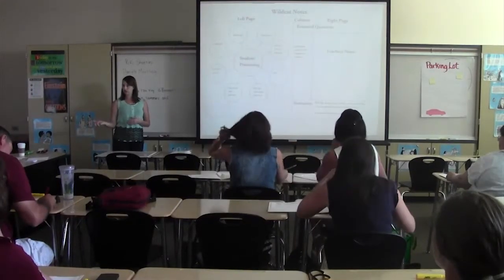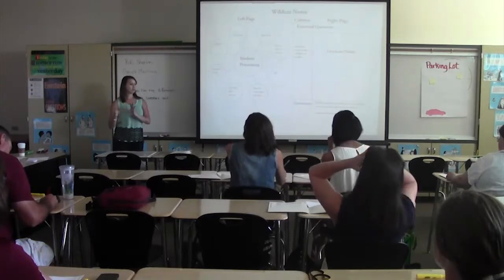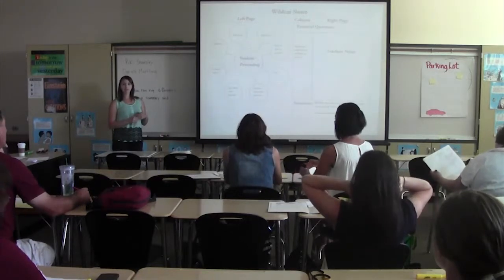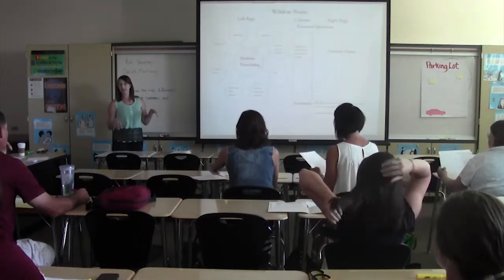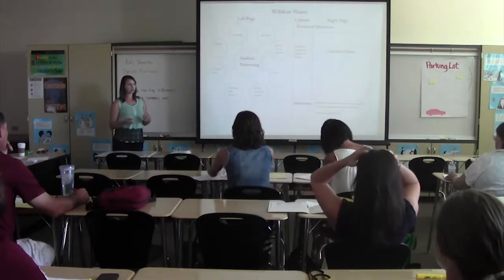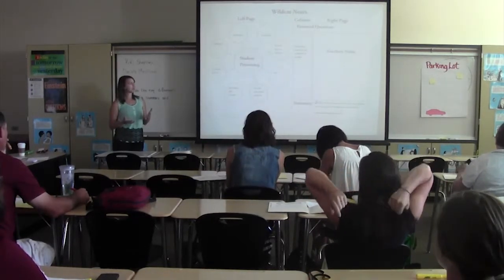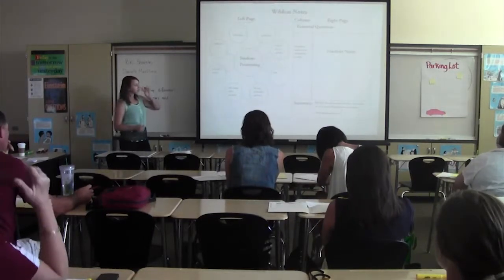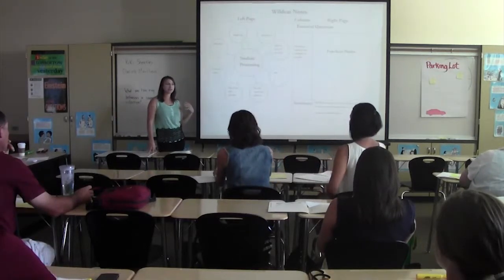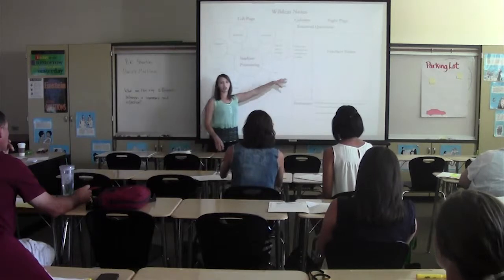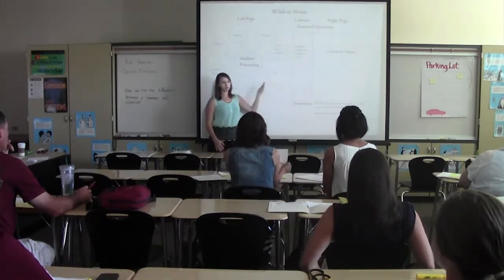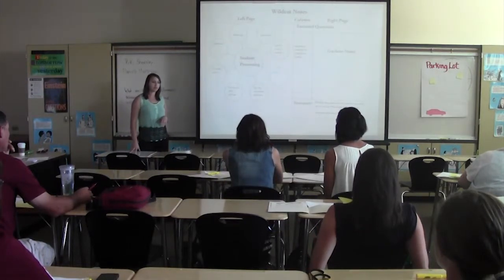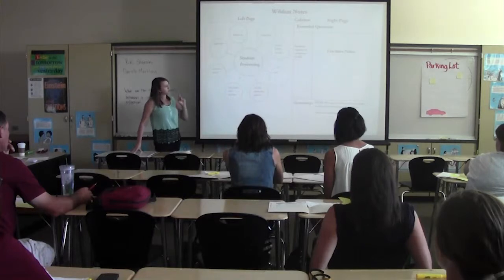We have the right side page, which is the Cornell formal notes side, and the left side page where it's the student processing side. This is called in the education world an interactive notebook, so just in case you want that terminology if you're searching for something. The rest of the world doesn't have CAT notes, so I want to make sure that you know. We want to focus on this because instead of having students copy information only, we want to have them master it, and that's where our left side page is going to allow us more room for that.